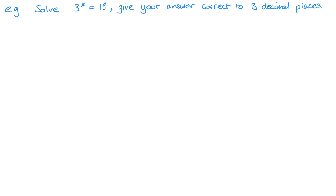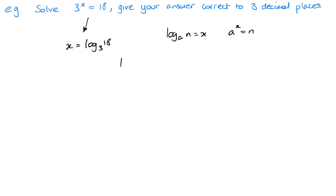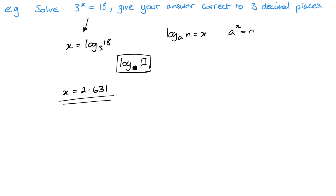There are actually two ways of solving this, and I'm going to do both. The first is to use the conversion from power form to log form. So 3 to the power of x equals 18 converts to x equals log of 18 to the base 3. Then I just need to go to my calculator using the log base button, and I get x equals 2.631 to three decimal places.